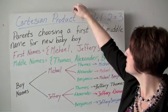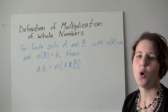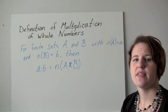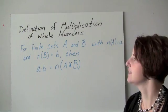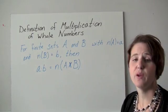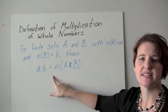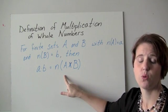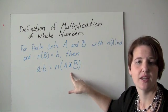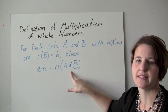To write a formal definition: for the multiplication of whole numbers, if we have sets A and B where the size of set A is little a and the size of set B is little b, then little a times little b is the size of the Cartesian product A cross B. Remember, we don't multiply sets — we look at their Cartesian product, and its size equals little a times little b.